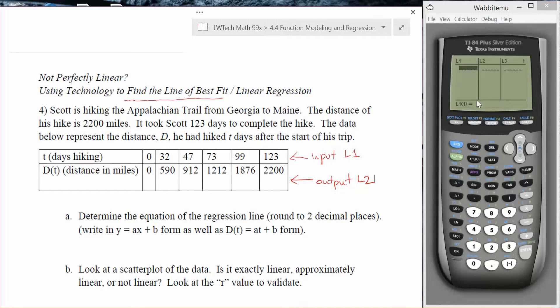Once we've got our list one ready to go, we're going to enter each one of these data points. So we're going to have zero, and then you hit enter to go to the next line. 32, 47, 73, 99, and 123. Then we're going to arrow to the right. In list two we're going to put in zero, 590, 912, 1,212, 1,876, and then the end of his trip which was at 2,200.